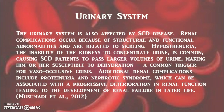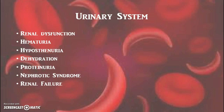Renal complications are examples of how sickle cell anemia affects the urinary system. Sickle cell patients frequently urinate more than persons without the disease and must drink large quantities of water to prevent dehydration. Renal dysfunction and possible eventual failure, hematuria, and nephrotic syndrome are among several complications that affect the urinary system.